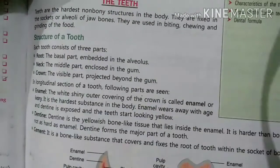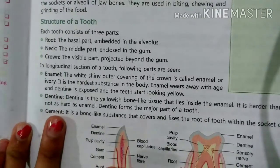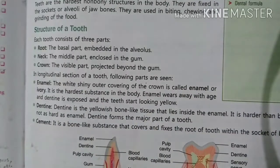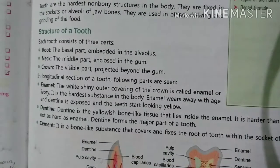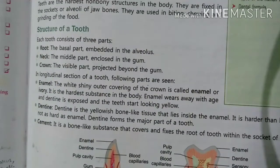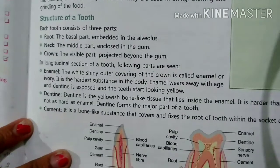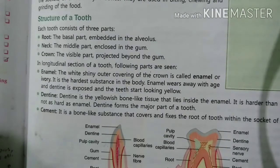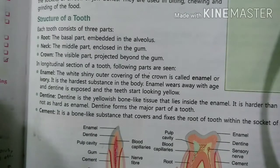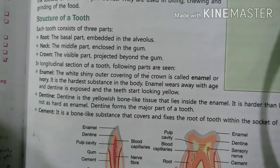The first part is enamel — the white, shiny outer covering of the crown. We call it enamel or ivory. Enamel is the hardest substance of our body. When enamel wears away, teeth start looking yellow. Dentine forms the major part of the tooth. It is harder than bone but not as hard as enamel.